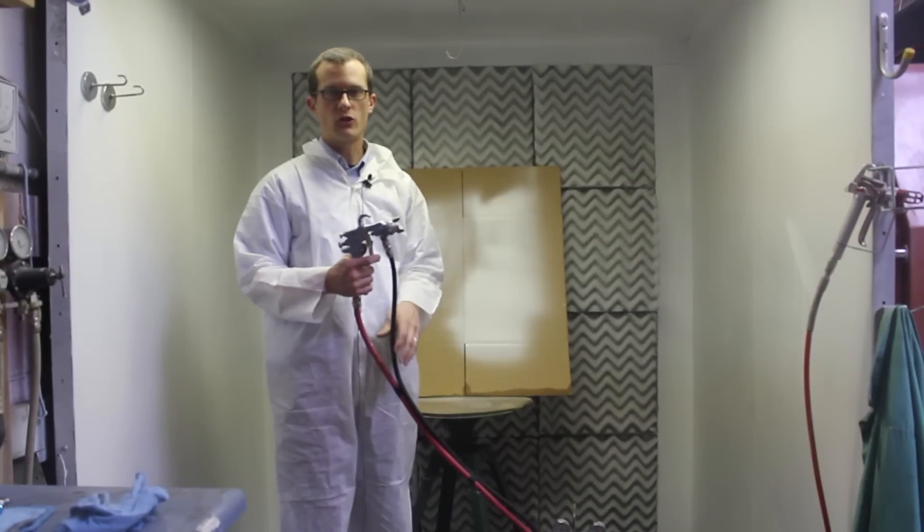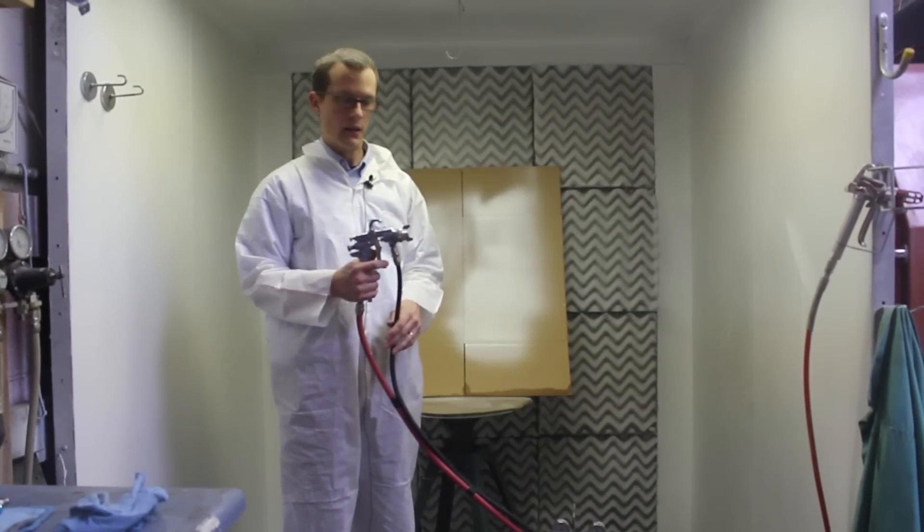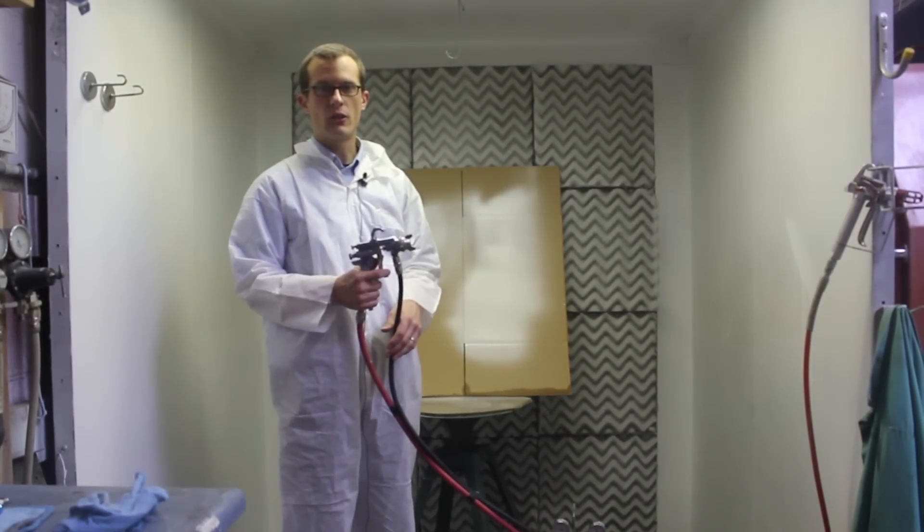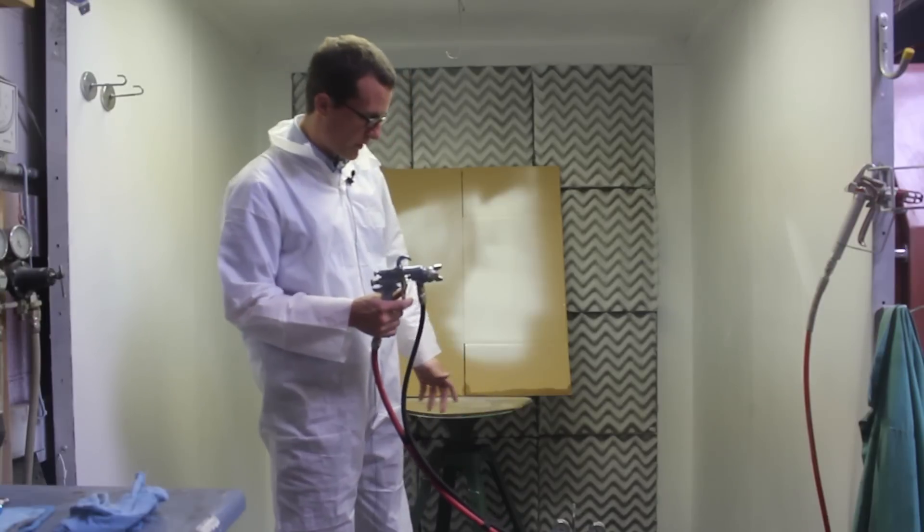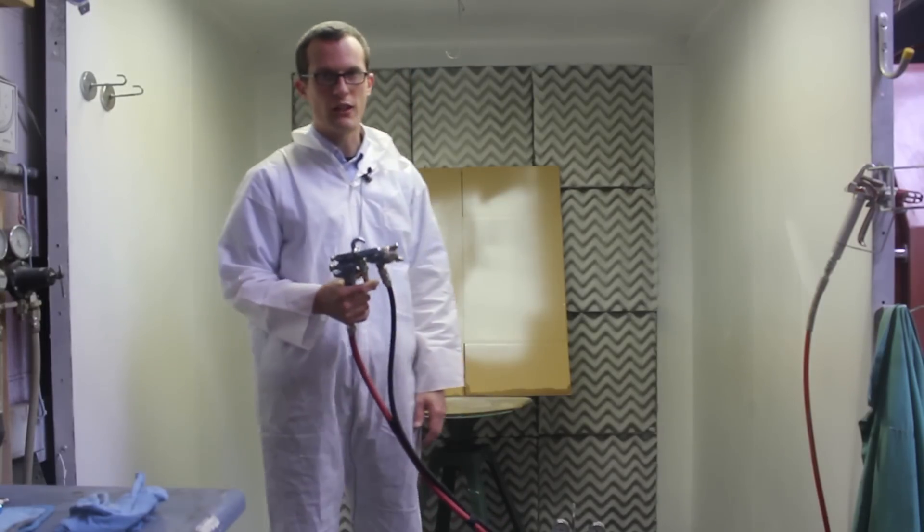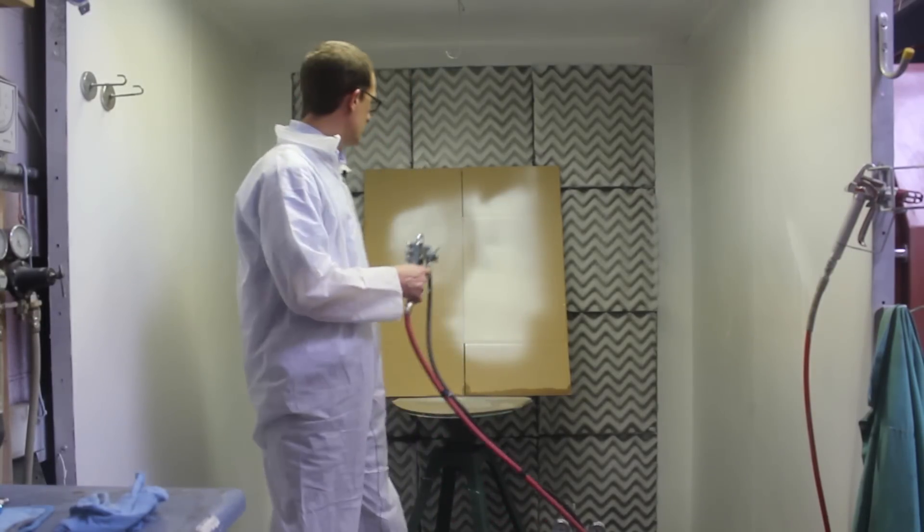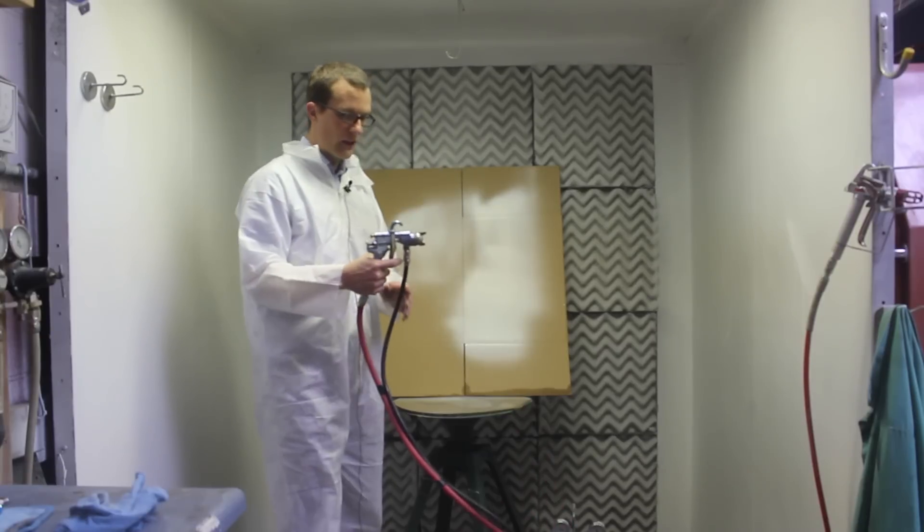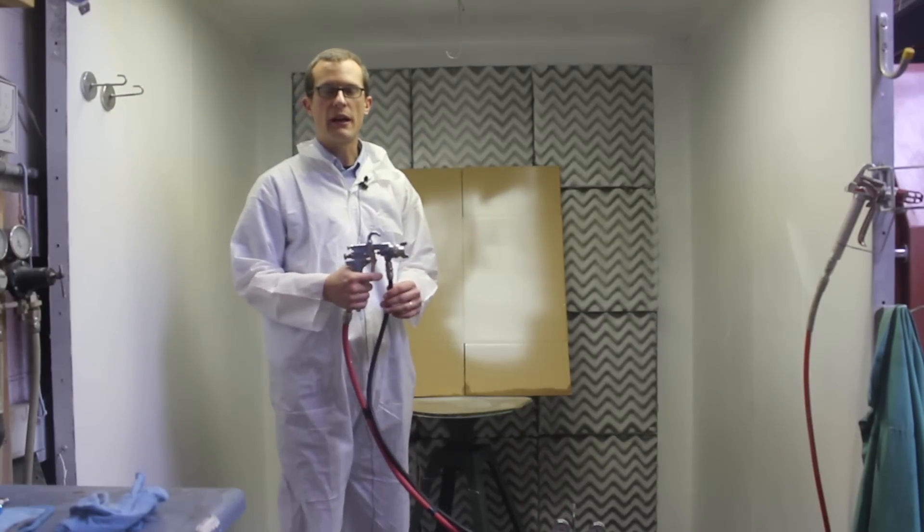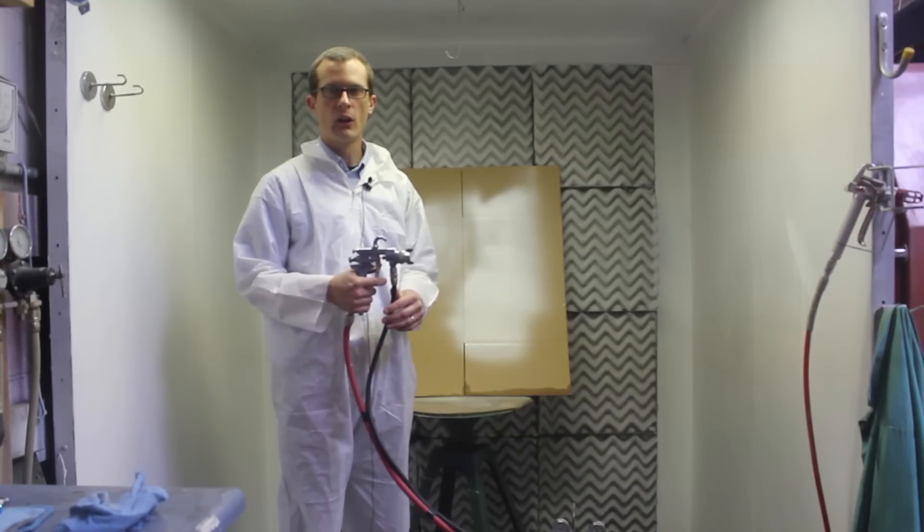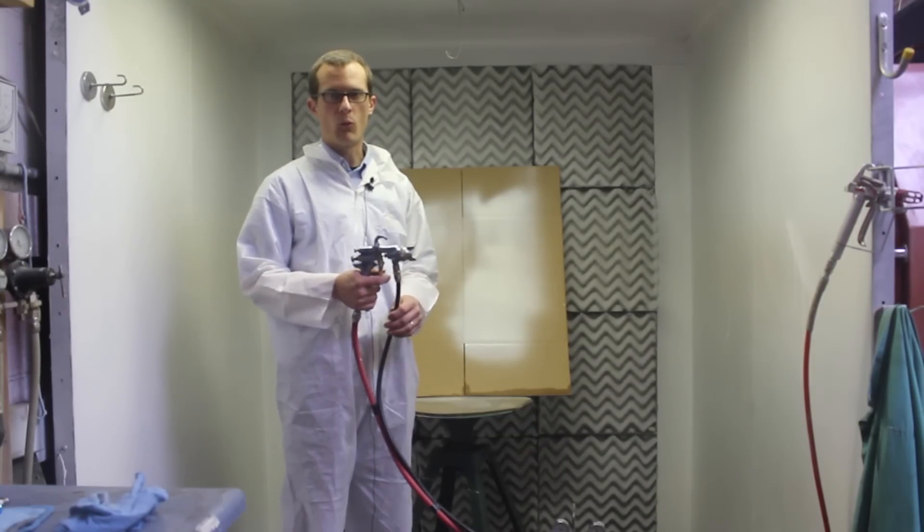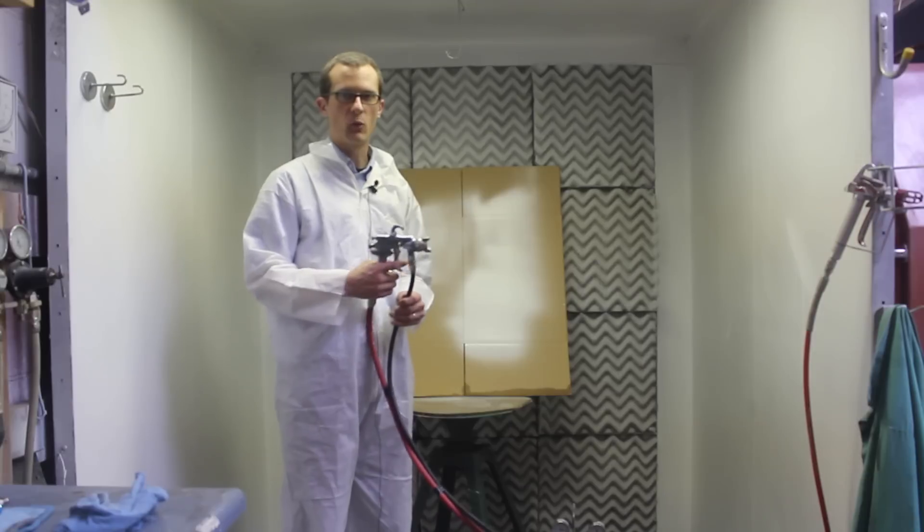Alright so this is a conventional spray gun. We're using a pressure pot. The material isn't thin so you can see some of the limitations as far as break up go. Our fluid pressure is around 20 pounds and our air pressure is around 20 as well. Some of the main benefits to conventional are our ability to break up heavier coatings but still maintain finer control of your pattern or open it up and widen the pattern to go faster as well.